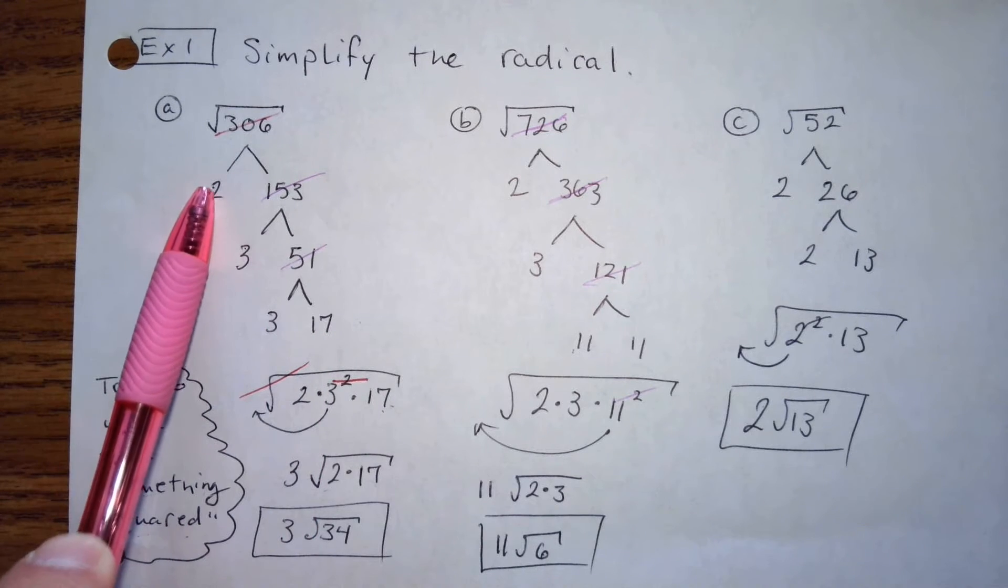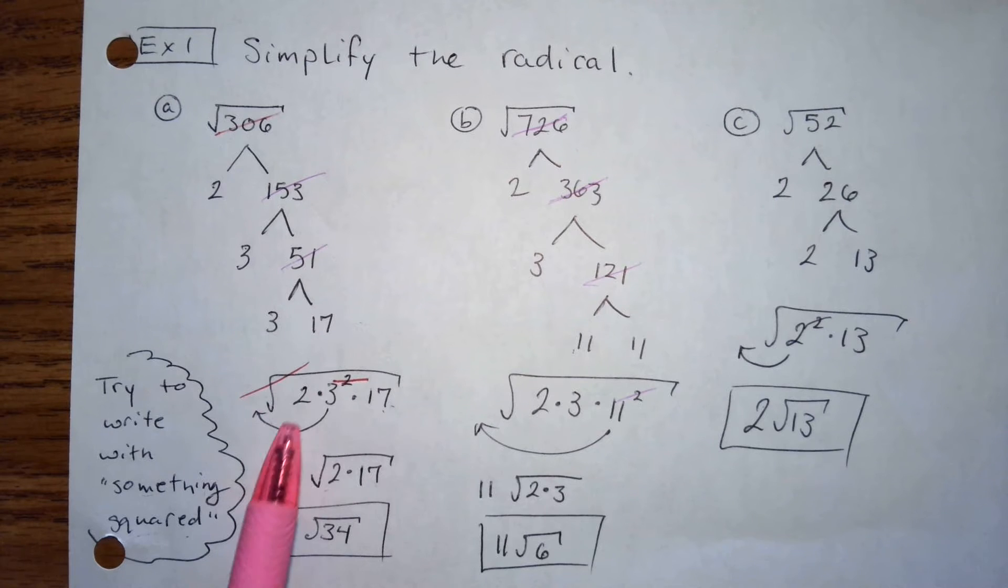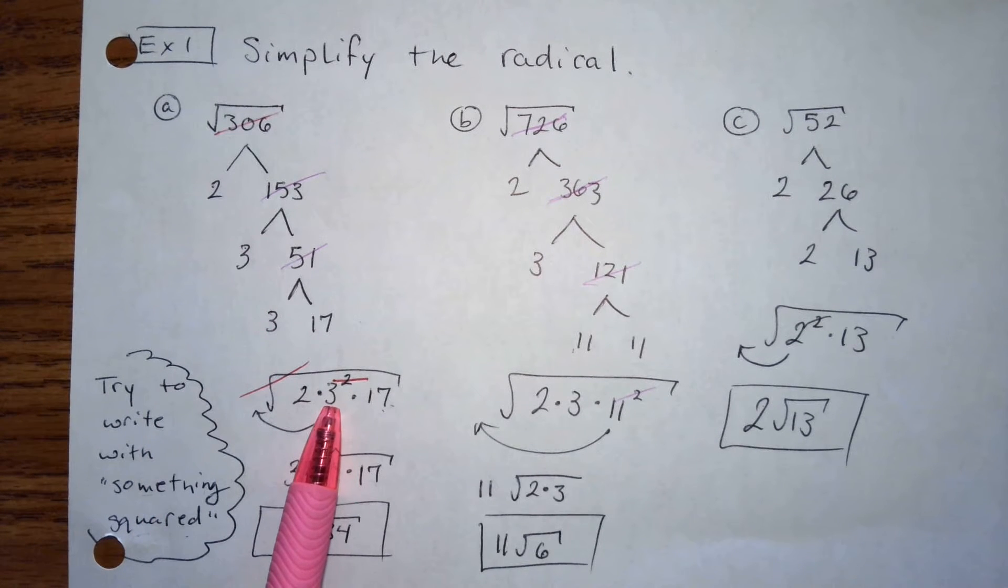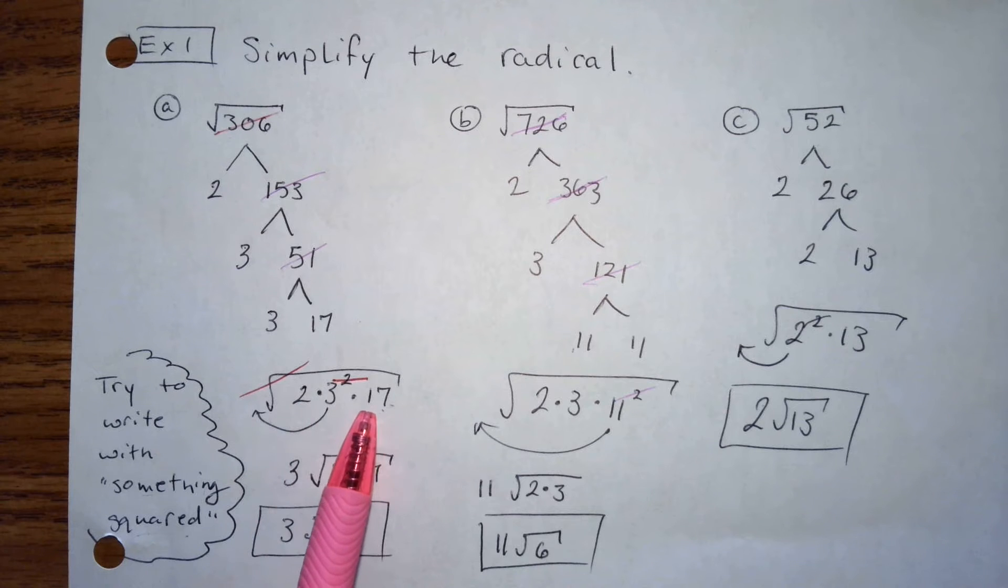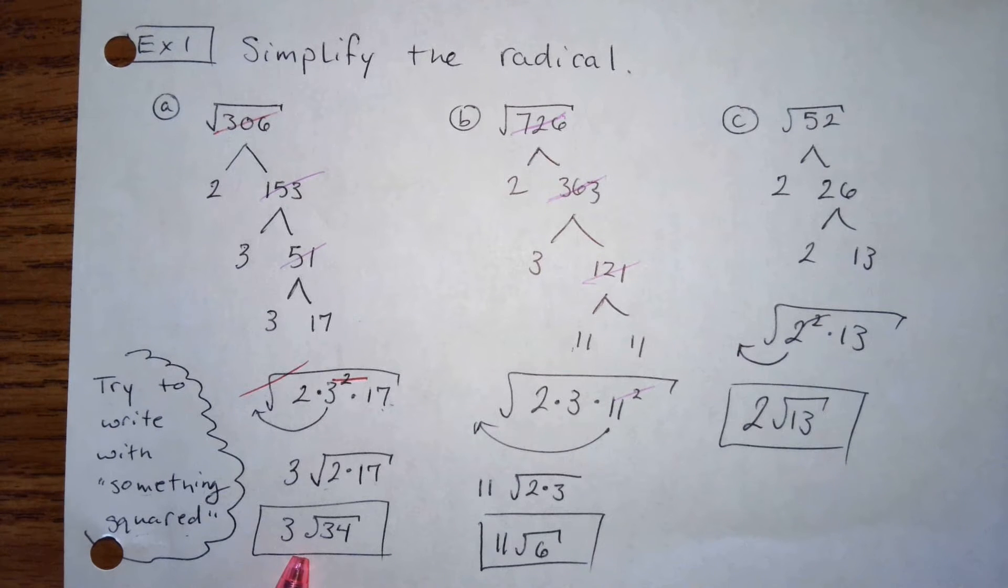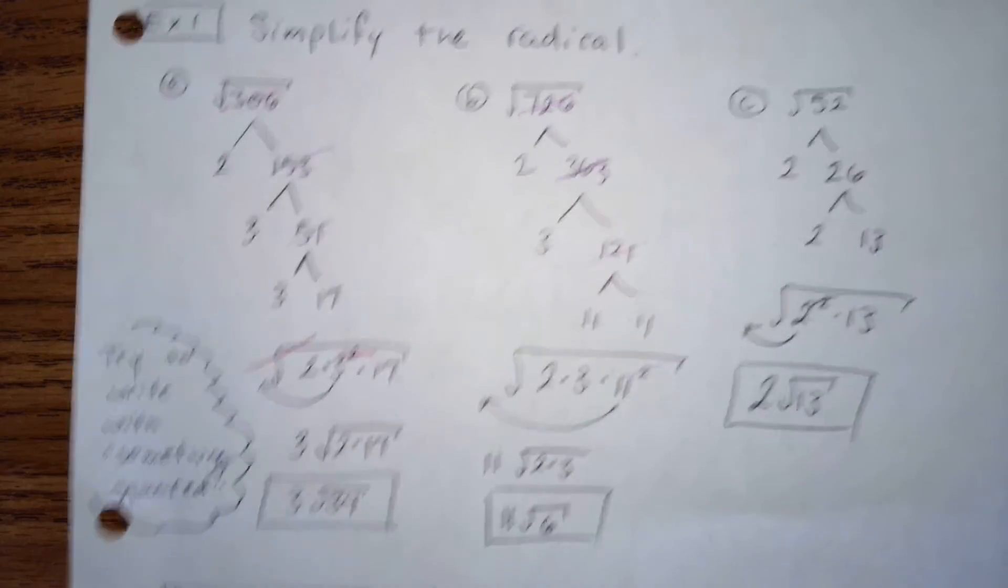And then write down, okay, two, there's only a single two here, so I just write down a single two. There are two threes, so I can write it as three squared, but the square and the square root cancel out. So I can bring the three on the outside, and I'm just left with two and 17. So that's how you reduce. We're going to practice that with whiteboards tomorrow. We'll talk about it, we'll practice it with whiteboards. That's that.